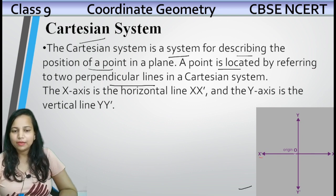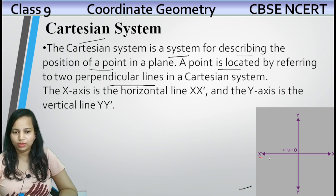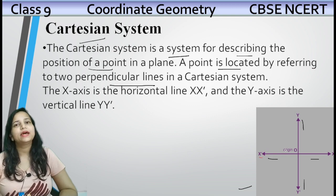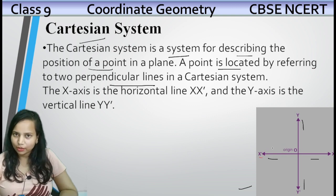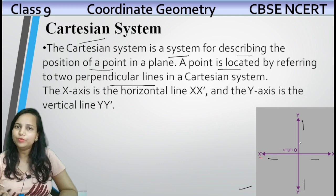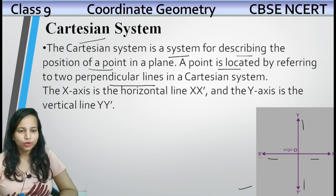Yeh ek plane hai. Ismein do lines draw ki hain — ek x-x dash hai, aur doosri y-y dash hai. Aur ye dono lines aapas mein perpendicular hain. Toh in ki help se hum object ki position ko find out karte hain.